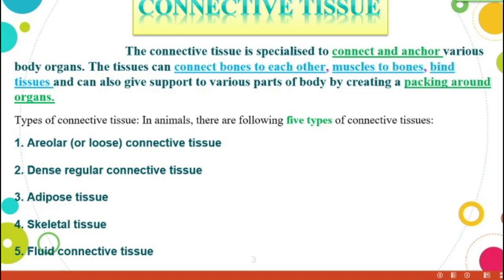Types of connective tissue in animals — there are five types. The first one: areolar or loose connective tissue. Second: dense regular connective tissue. Third: adipose tissue. Fourth: skeletal tissue. And fifth: fluid connective tissue.